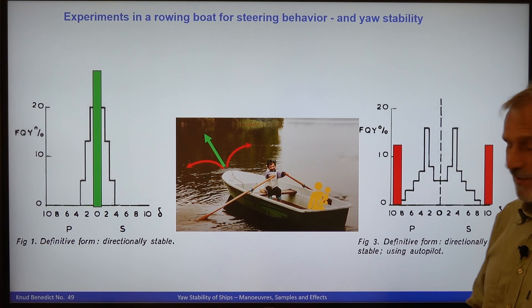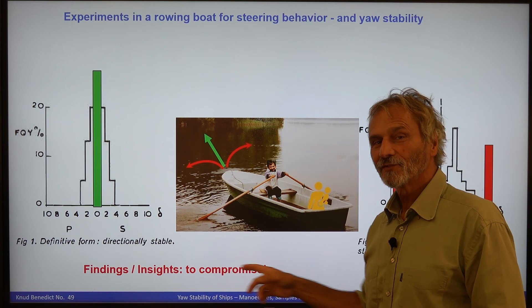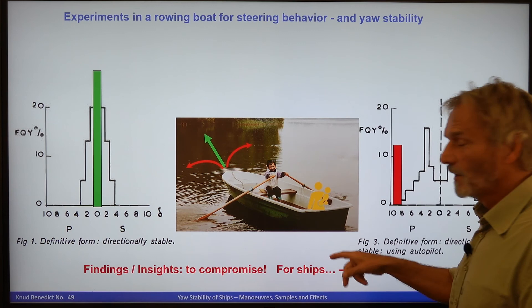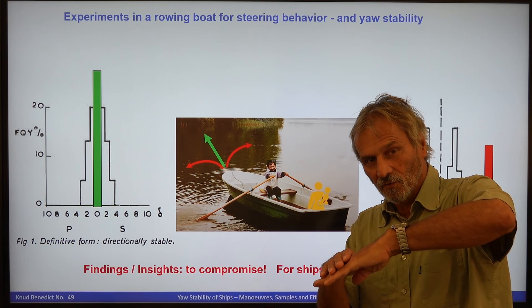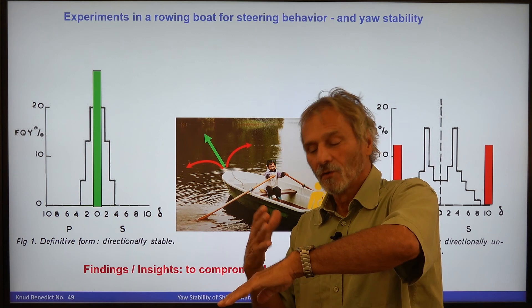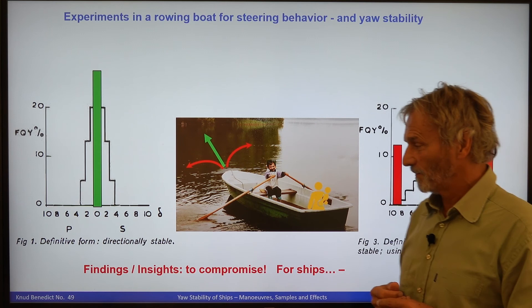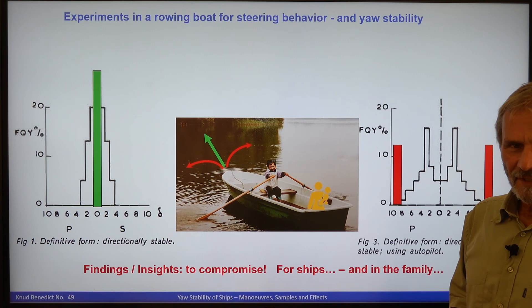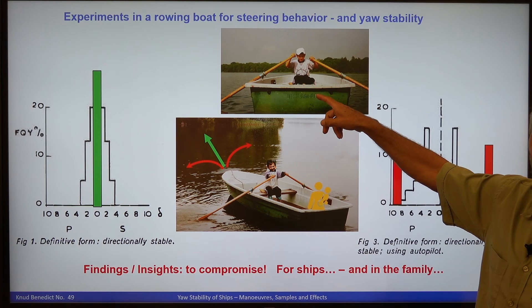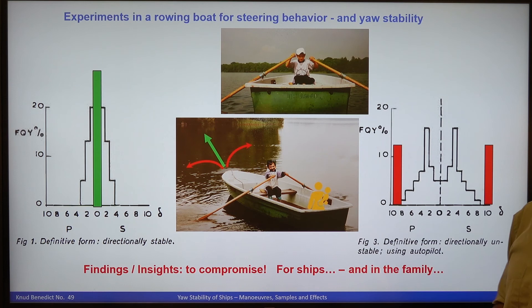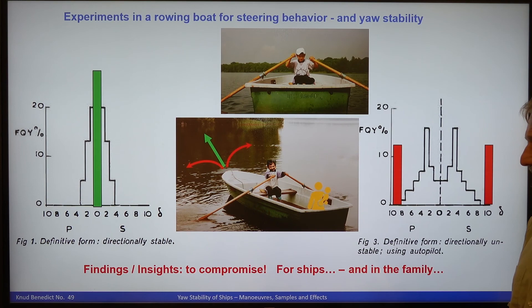The conclusion: you always have to look for a compromise. For ships, bow trim is good for small resistance only, but if you are not able to steer the ship straight, you will ruin your advantages through the steering actions — so there's no sustainable benefit from the bow trim anymore. You must have an optimal trim. And for the family — the first compromise was allowing our son to row the boat alone, and for my wife I did my very best through the last 55 years to stabilize our family.